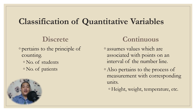If the variable is quantitative, you may classify it further into discrete or continuous. Discrete pertains to the principle of counting — examples include number of students and number of patients. Continuous assumes values associated with points on an interval of the number line, pertaining to the process of measurement with corresponding units — examples include height, weight, and temperature. Discrete data contains finite values with nothing in between, whereas continuous data can include fractions and decimals.